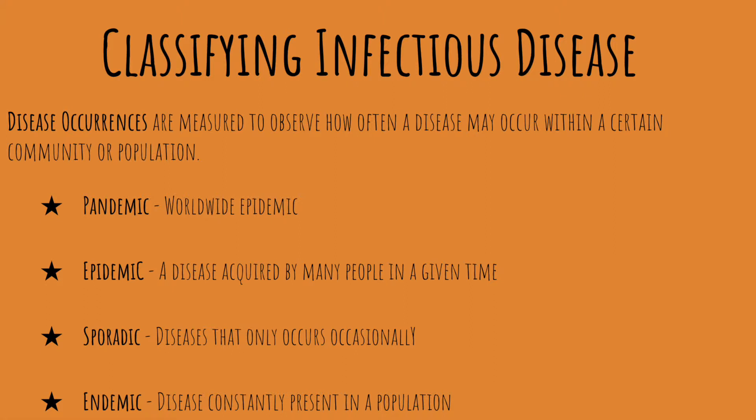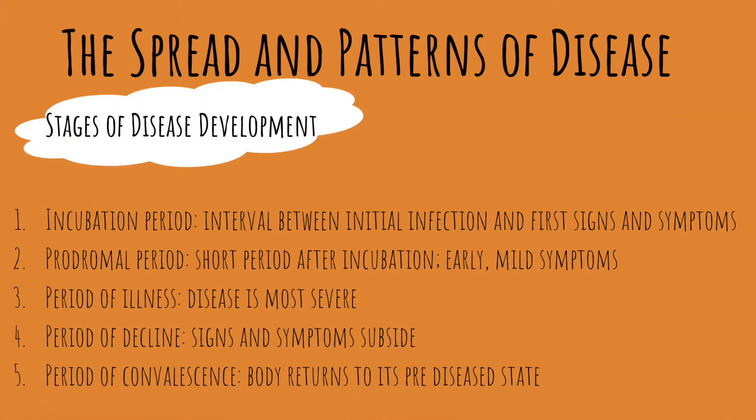Disease occurrences are measured to observe how often a disease occurs within a community or population. There are four major classifications: pandemics, which are worldwide disease outbreaks; epidemics, where many people are acquiring a disease at the same time; sporadic diseases, which occur only occasionally; and endemics, which are diseases constantly present within a population.